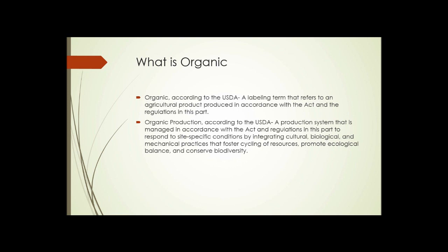What is organic? We hear the word a lot, but what does it really mean when something is labeled organic? According to the USDA — the United States Department of Agriculture — organic is a labeling term that refers to an agricultural product produced in accordance with the Organic Act and its regulations. Organic production is a system managed to respond to site-specific conditions by integrating cultural, biological, and mechanical practices that foster cycling of resources, promote ecological balance, and conserve biodiversity.